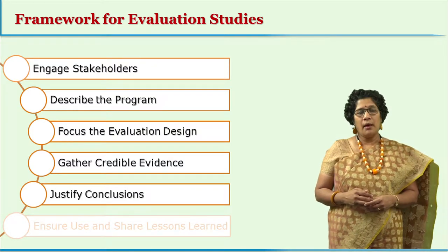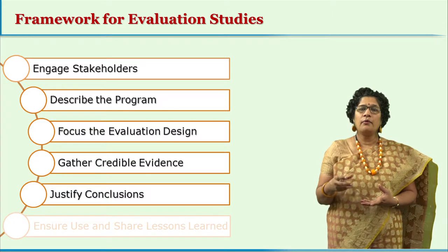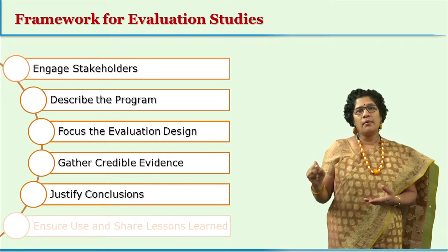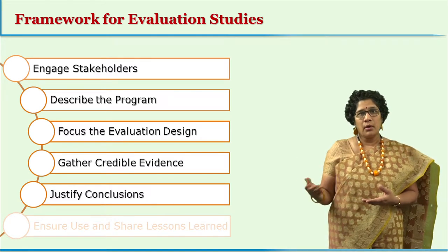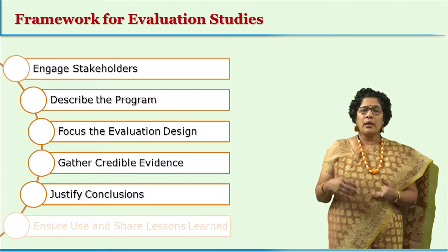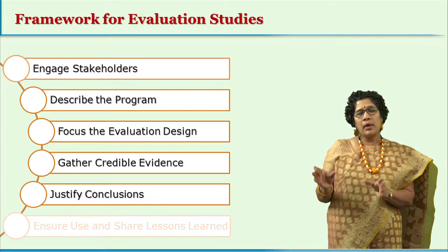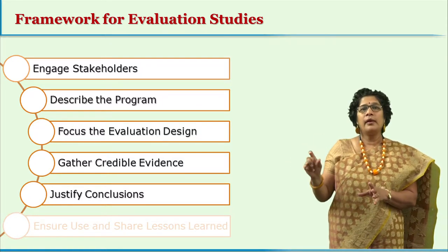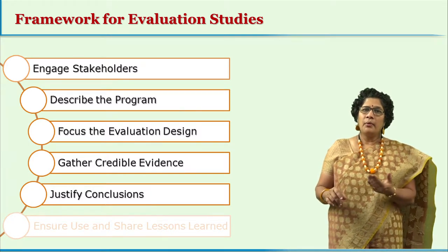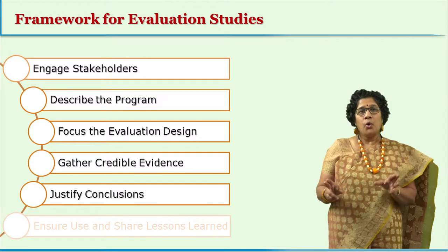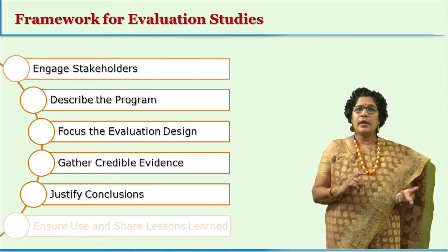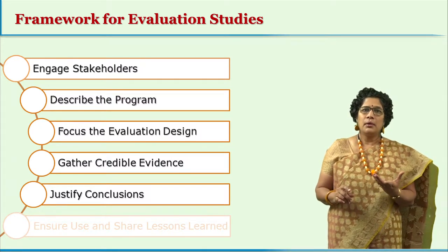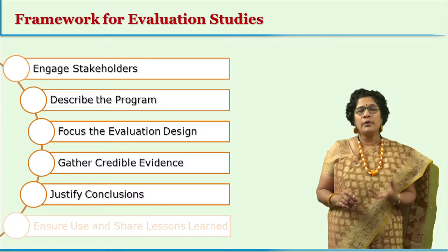The fifth step is justifying the conclusions. After data analysis, conclusions are drawn and justified through discussion. For example, if a particular practice in the program is successful, one analyzes why it is liked by the industry. Or if the industry says they hire candidates because of their research skills, the program evaluator connects this data with the actual experiences given during the program for development of research skills. Such justifications provide valuable inputs to those conceiving the program.